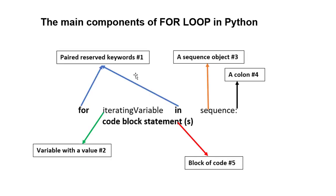The Python for loop is not like the for loop in some other programming languages that you may be used to. For example, the syntax is not the same — they are quite different. When you look at the Python for loop the first time it may look confusing because the mechanisms that make the looping happen are not very clear. However, it will be explained here and this video will help you to understand the process very well.